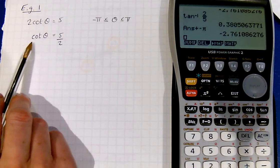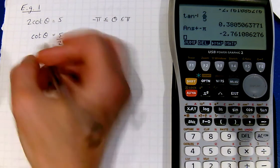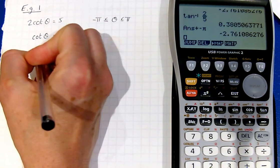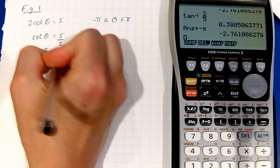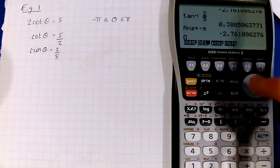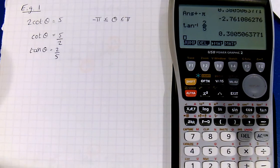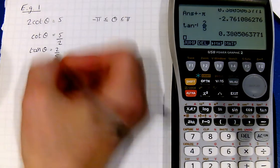Your calculator doesn't have a cot button, so we take the reciprocal. We're now in a position to use inverse tan on the calculator, so shift tan of 2 fifths gives us 0.381 radians.